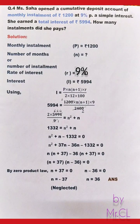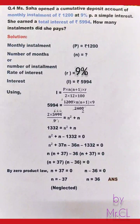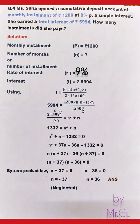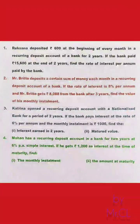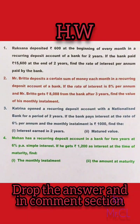Since n = −37 is rejected (number of months cannot be negative), the answer is n = 36 monthly installments. These were all four types of questions discussed. The following four questions are for your homework — solve them and drop your answers in the comment section for confirmation.